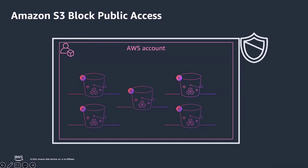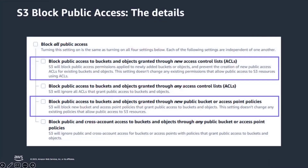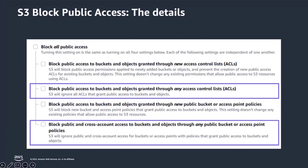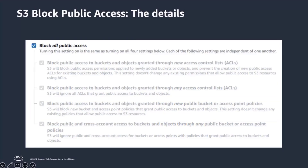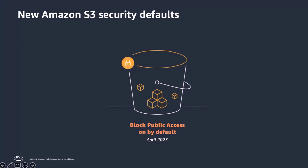Let's dive into the four settings available within block public access. Enabling the first two settings, you can block public access granted via new access control lists and new bucket policies. S3 will block uploading new objects with public ACLs and will block new public bucket policies. You can also block public access granted through existing access control lists and bucket policies — S3 will ignore existing public ACLs and existing public bucket policies. We advise enabling all these settings to prevent public access to S3 resources. Block public access will be enabled by default for newly created S3 buckets after April 2023.